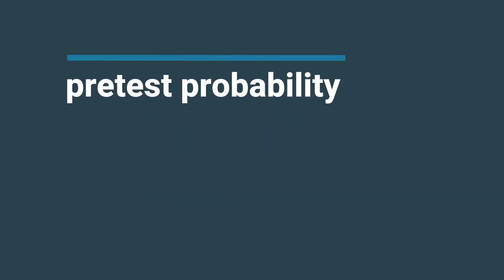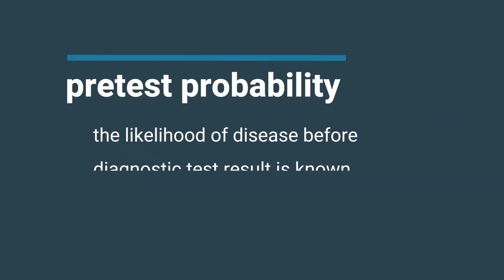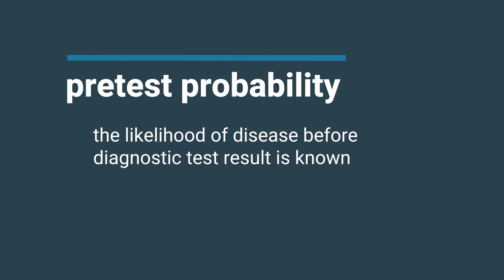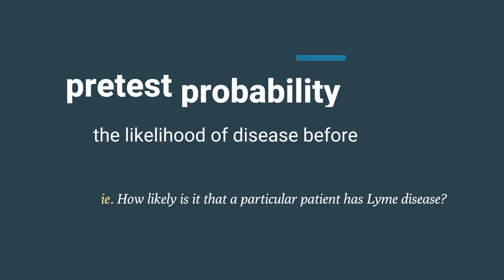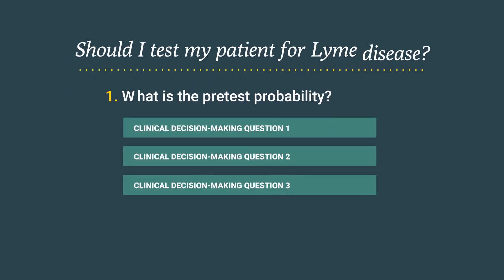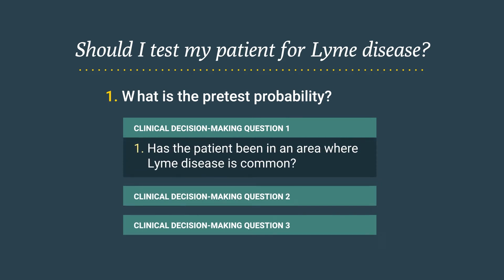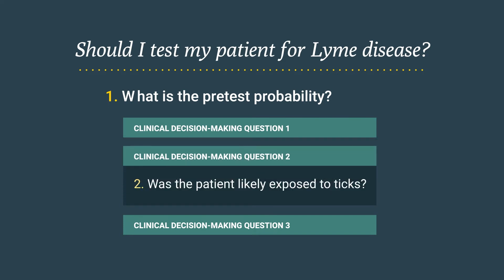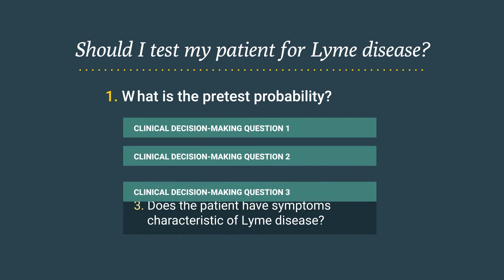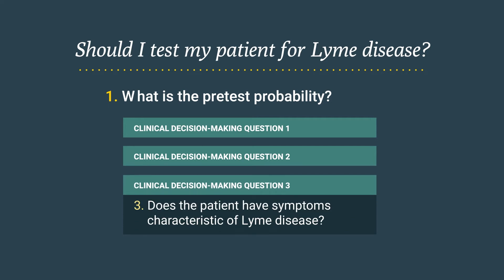Pre-test probability is defined as the likelihood of disease before a diagnostic test result is known. In other words, what is the clinical probability that a particular patient has Lyme disease? Three questions can help you make this determination. First, has the patient been in an area where Lyme disease is common? Second, was the patient likely exposed to ticks? Third, does the patient have symptoms that are characteristic of Lyme disease?